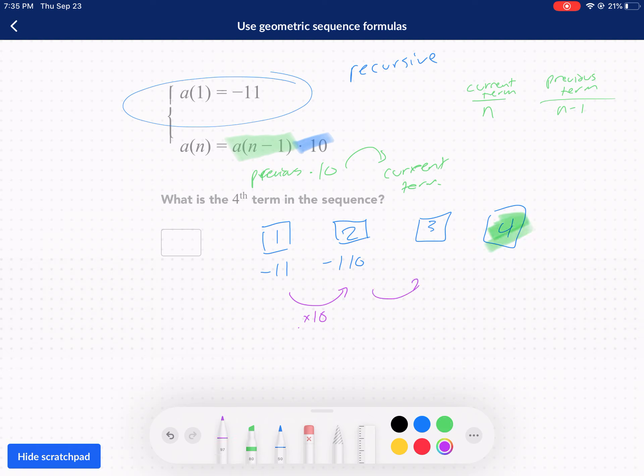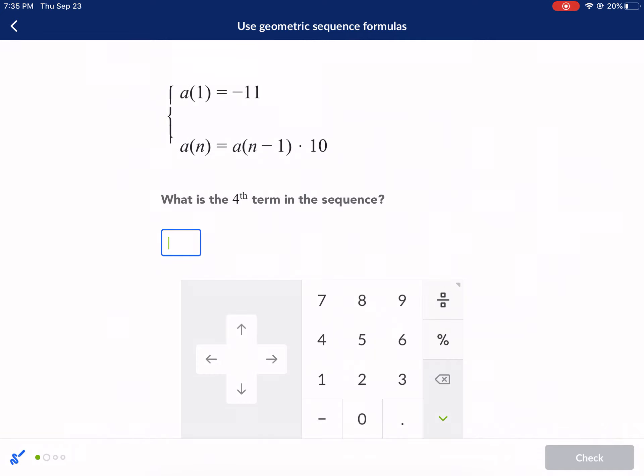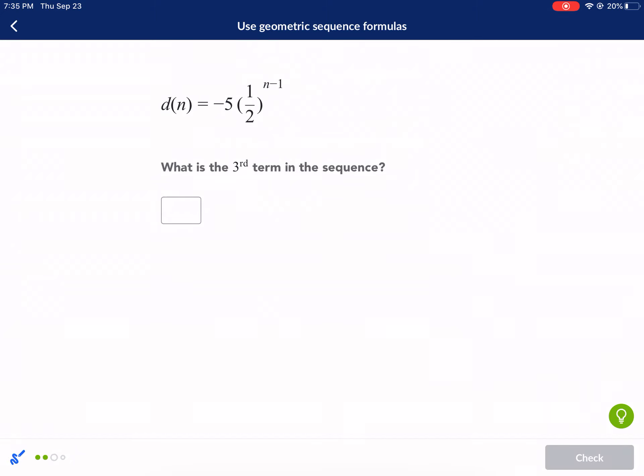So I'm multiplied by 10 again. I'll multiply it by 10 again. I'm just going to add a zero each time I do this. So negative one, one, zero, zero, and then negative one, one, zero, zero, zero. So that's negative 11,000. So that escalated very quickly. And that's going to be my fourth term in the sequence. Let's punch it in. Negative one, one, zero, zero, zero. Check it. Next question. Two more.